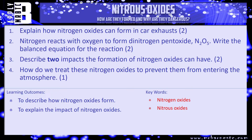That really is everything you need to know. I've got a few questions for you here. Number one, explain how nitrogen oxides can form in car exhausts. Number two, nitrogen reacts with oxygen to form dinitrogen pentoxide — formula N2O5 — write the balanced equation for the reaction. Remember, nitrogen is N2 and oxygen is O2, and you're given that dinitrogen pentoxide is N2O5. Number three, describe two impacts the formation of nitrogen oxides can have. Number four, how can we treat those oxides to prevent them from entering the atmosphere? Pause the video, have a go, and we'll see how you've done in a minute.